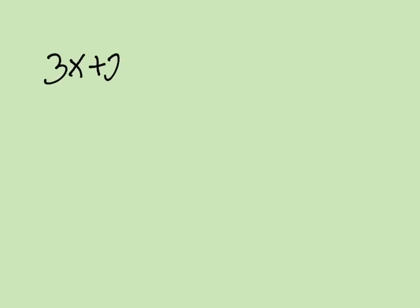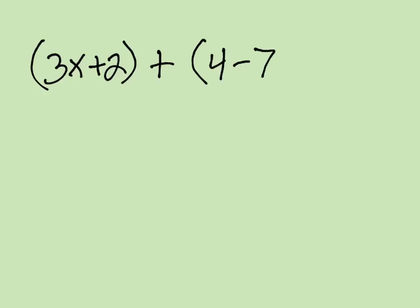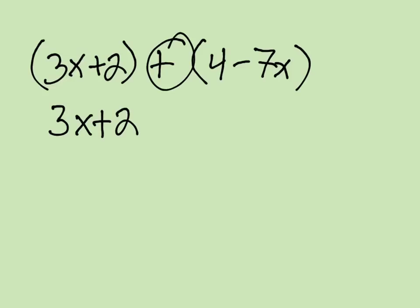If I have 3x plus 2, and I want to add that to the linear expression 4 minus 7x, then I just need to combine like terms. So that's 3x plus 2. There's a hidden plus 1 right there, so that's going to be plus 1 times 4, plus 1 times negative 7x.